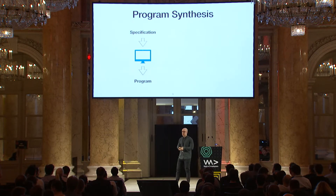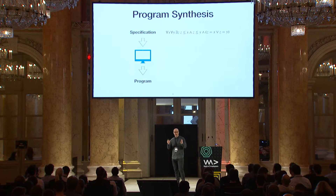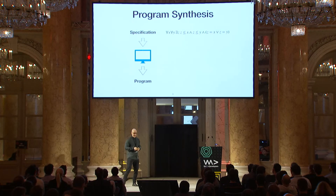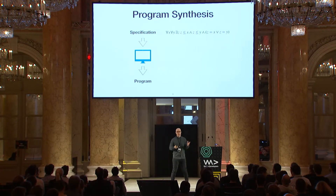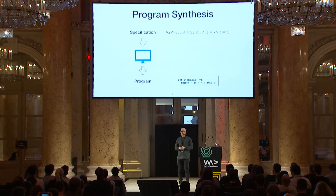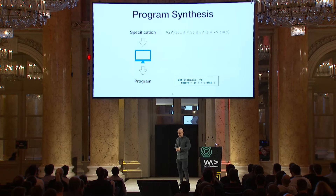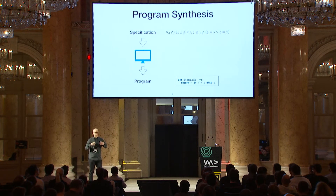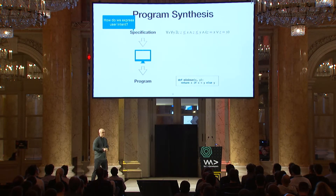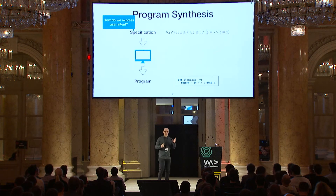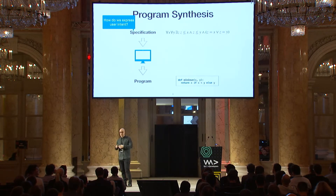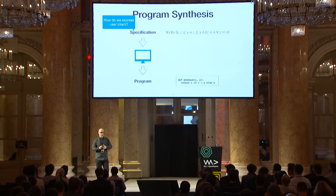What might such a specification look like in a simple case? I could write down a logical formula that says what the minimum of two integers has to satisfy, and then, if everything works correctly, the synthesis algorithm will come back with an implementation of that minimum function, say in a general-purpose programming language like Python. More generally, there are three components to a synthesis problem or synthesis algorithm. The first question is how do we express user intent — one option being a mathematical or logical formula, but we'll see other ways very soon.